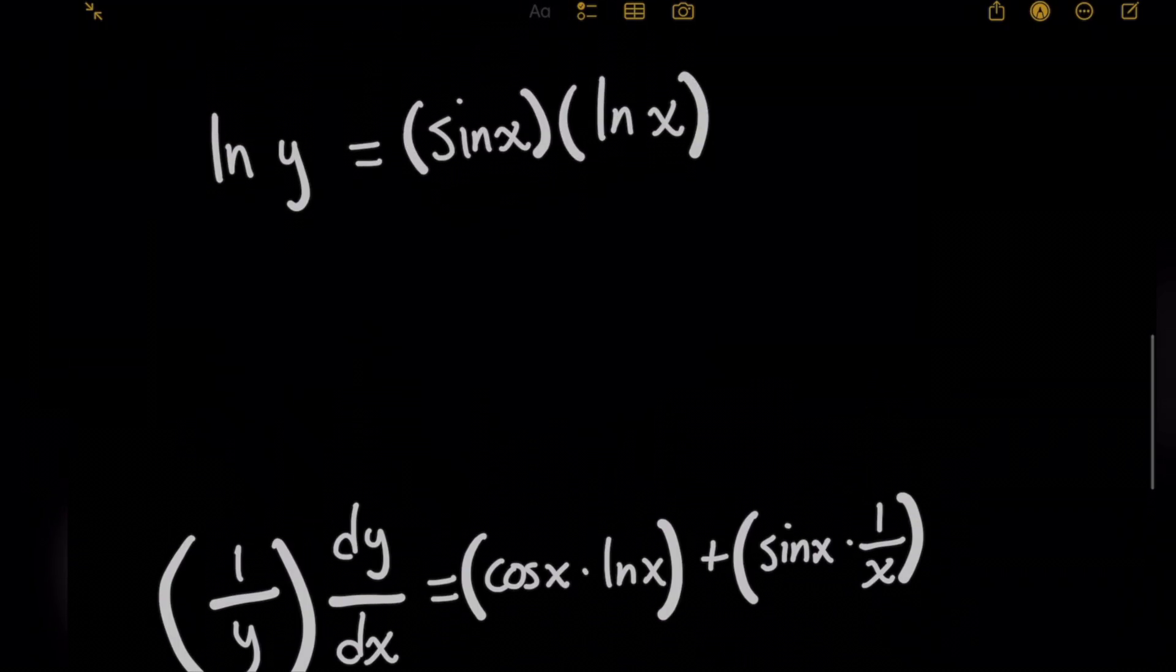So you get cosine of x times natural log of x for the first term, plus now taking the derivative of natural log of x itself, that'll give you 1 over x here, times the original left term, which is sine of x.